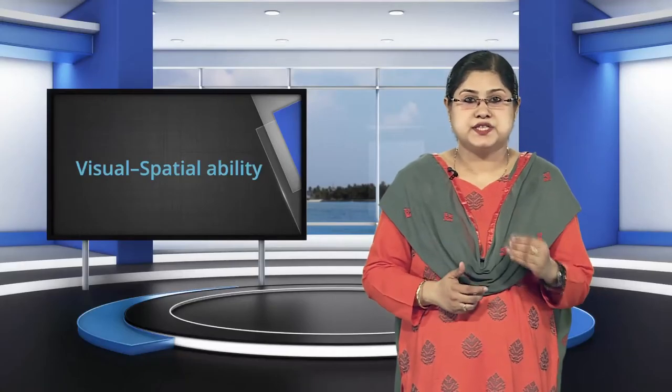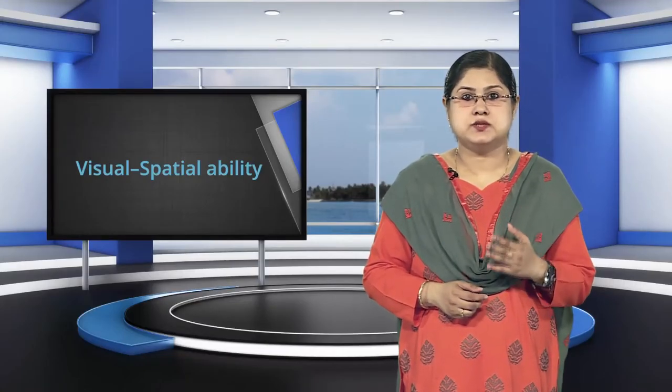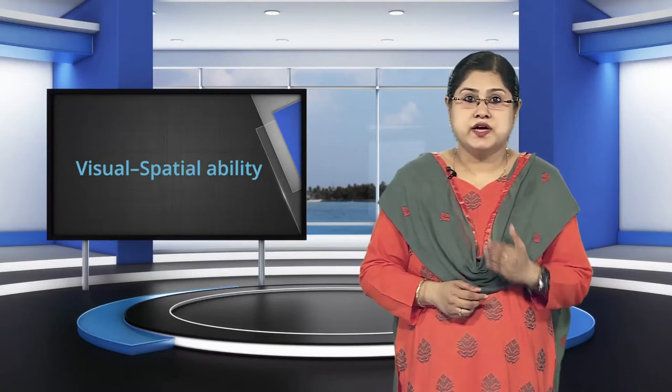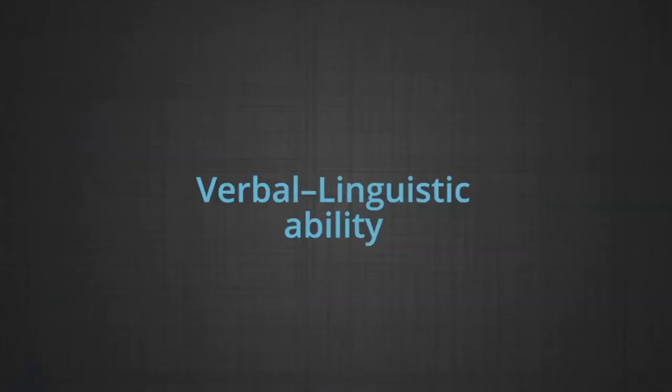Visual-spatial ability deals with spatial judgment and the ability to visualize. Spatial ability is one of the three factors beneath general intelligence in the hierarchical model of intelligence. Now let us see verbal-linguistic ability. People with high verbal-linguistic intelligence display a facility with words and languages. They are typically good at reading, writing, telling stories and memorizing words along with dates. Verbal ability is one of the most general intelligence-loaded abilities.